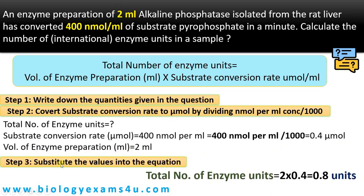Now substitute the values. Total number of enzyme units = volume of enzyme preparation (2 ml) × substrate conversion rate (0.4 micromole per ml). The answer is 0.8 units. Hope you are clear.